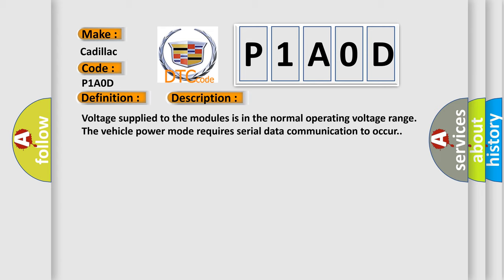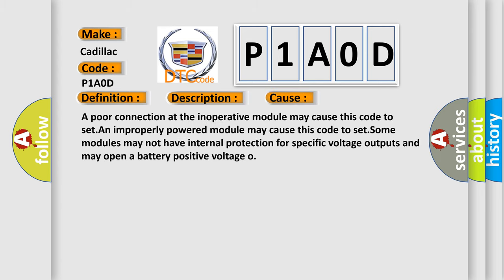This diagnostic error occurs most often in these cases: A poor connection at the inoperative module may cause this code to set. An improperly powered module may cause this code to set. Some modules may not have internal protection for specific voltage outputs and may open a battery positive voltage.